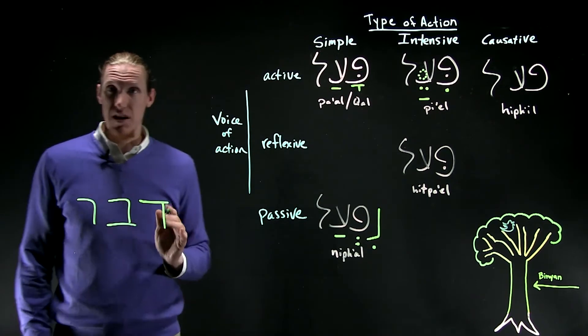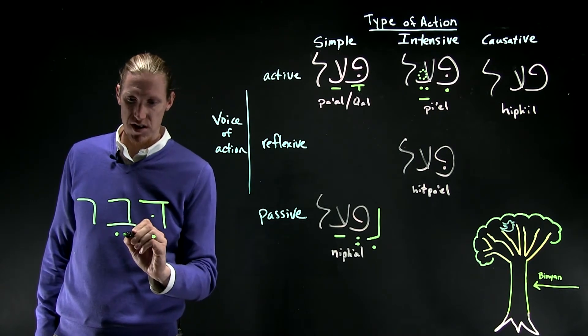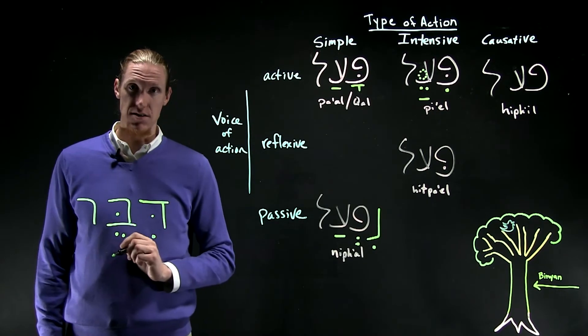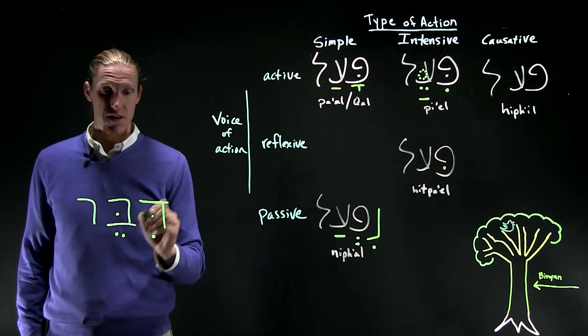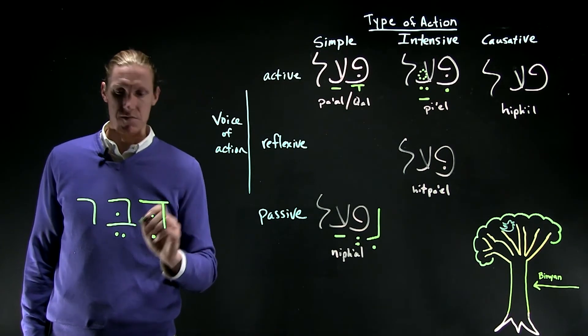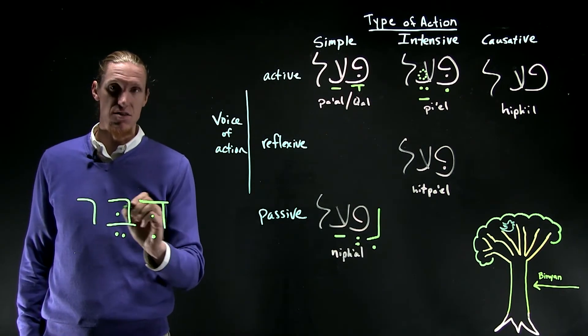The most common pi'el word, the most common verb that appears in the pi'el is dibber. Dibber. He spoke. So you see the e-ay. This is a dagesh lene because it's a begadkefat letter. And this is a dagesh forte in the bet because it follows a vowel.